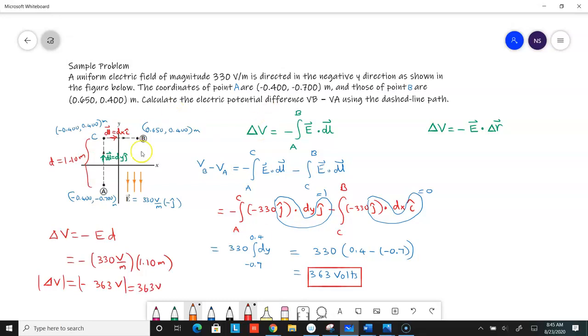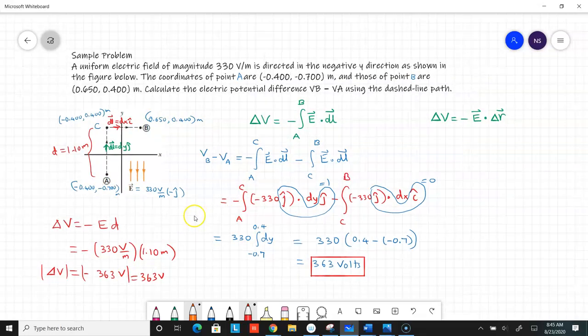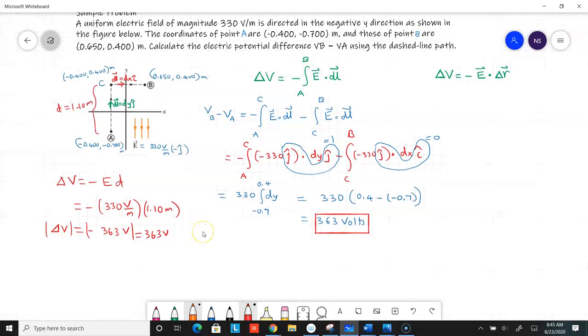And then you need to say point B is at a higher potential, it's higher up in the electric field compared to A. So VB minus VA has to be positive. So you could write this as VB minus VA is 363 volts. So that's totally okay to do as well.